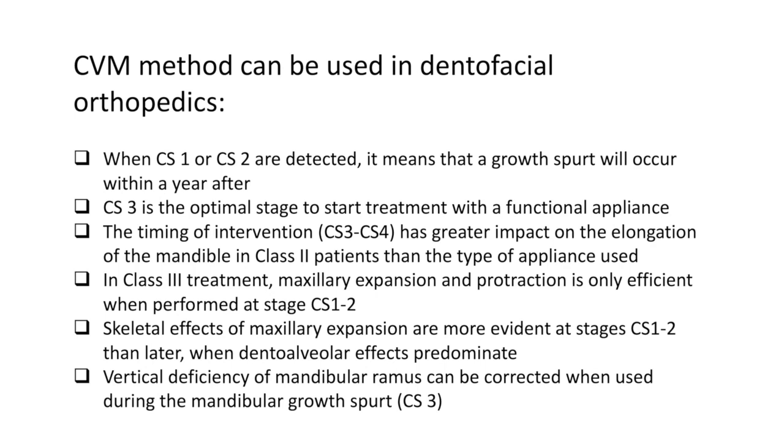This cervical vertebral maturation method can be used in dentofacial orthopedics with the following guidelines. When cervical stage one or cervical stage two are detected, it means that a growth spurt will occur within a year after. Cervical stage three is the optimal stage to start treatment with a functional appliance. The timing of intervention, either C3 or cervical stage four, has greater impact on the elongation of the mandible in class two patients than the type of appliance used.